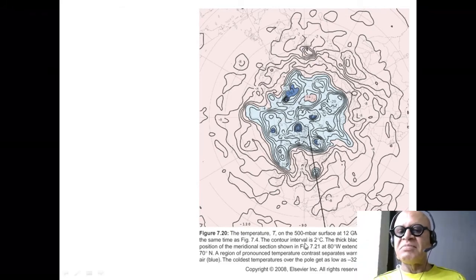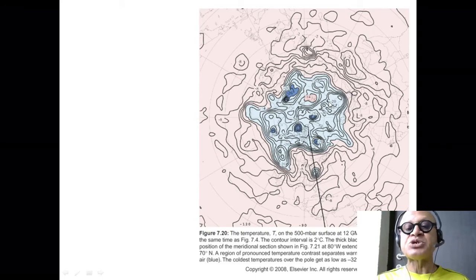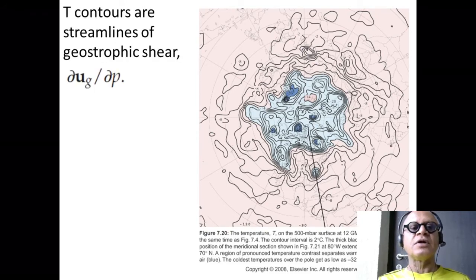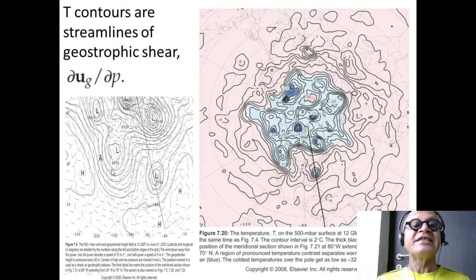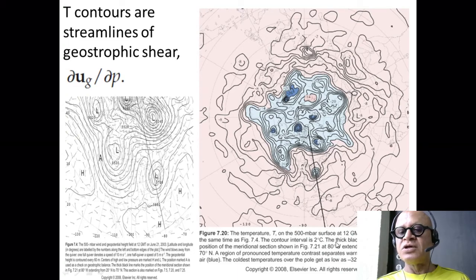We can then go back to our 500 millibar surface. We said the contour intervals here are temperature contours. What did we say? We said temperature contours on pressure surfaces are streamlines of geostrophic shear. As opposed to the height contours on pressure surfaces being streamlines of geostrophic flow. So you can see the same exact thing here, June 21.